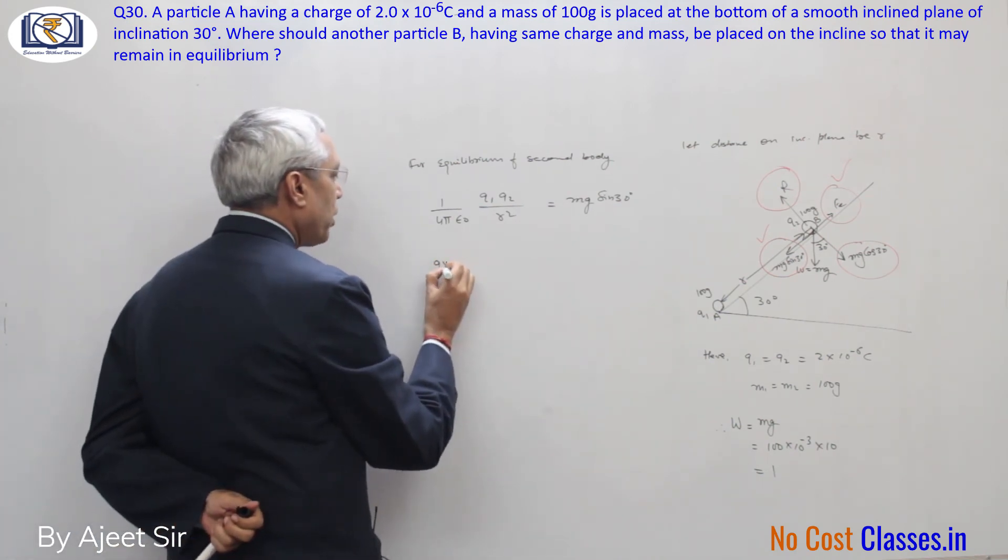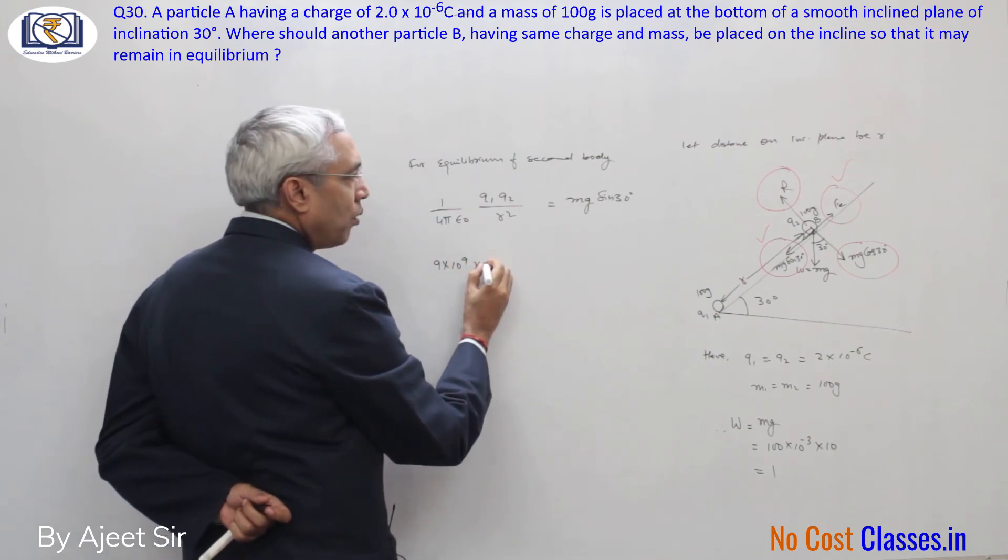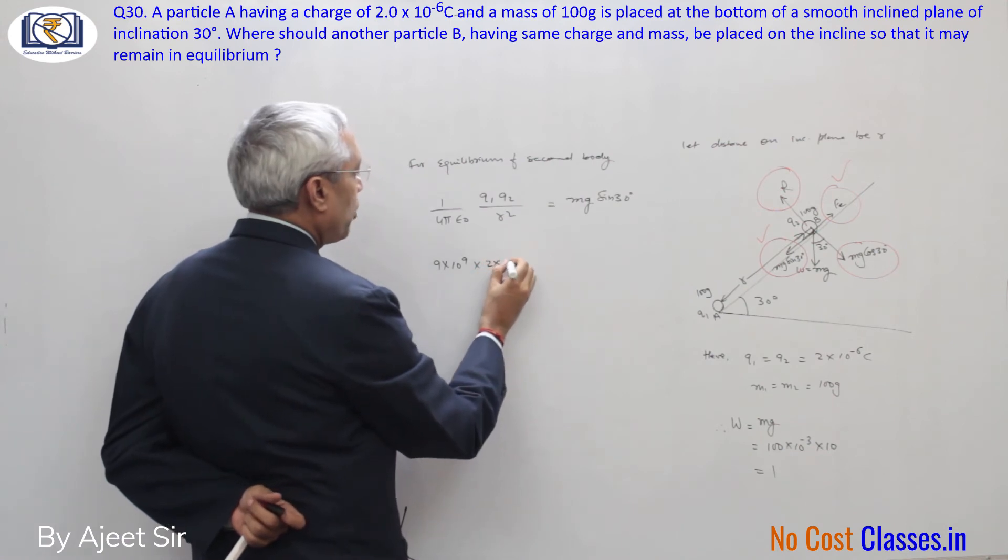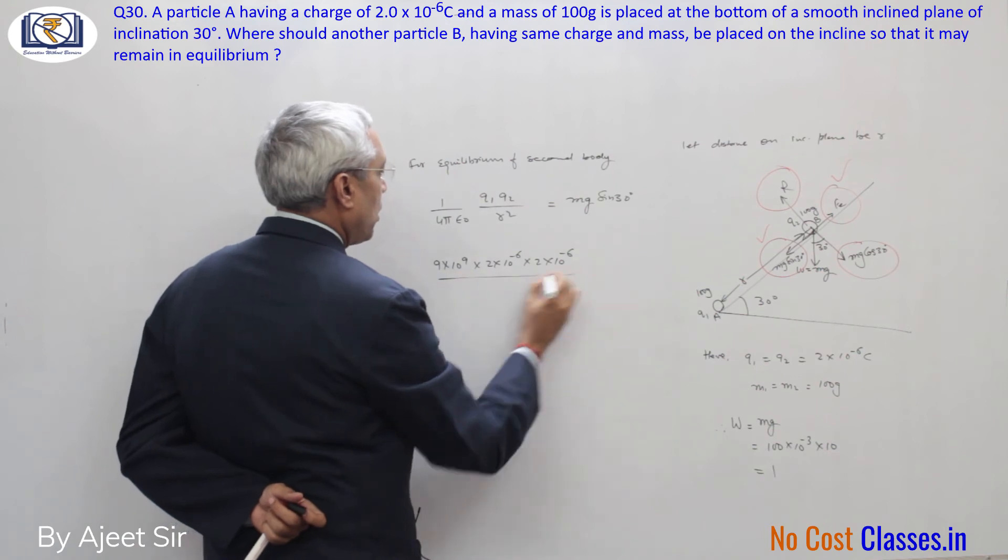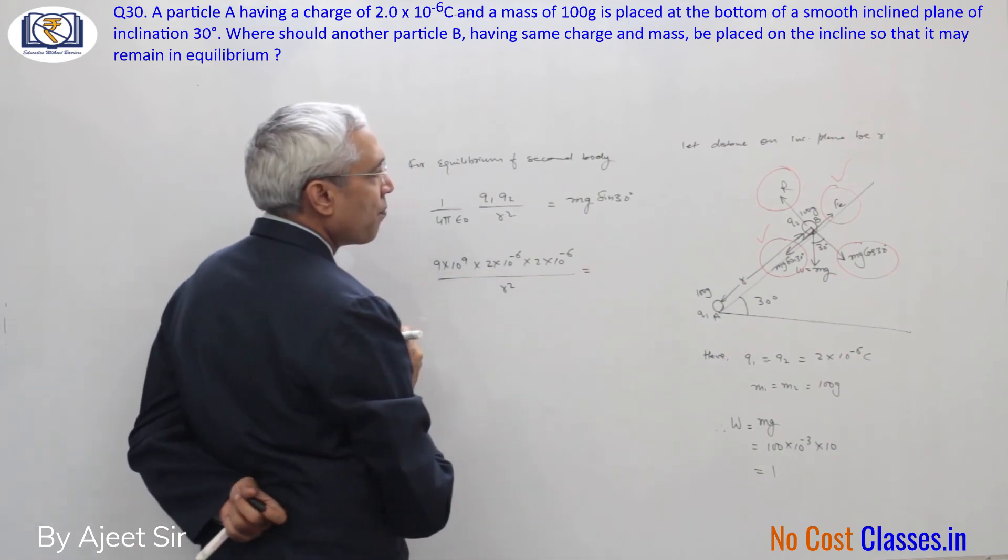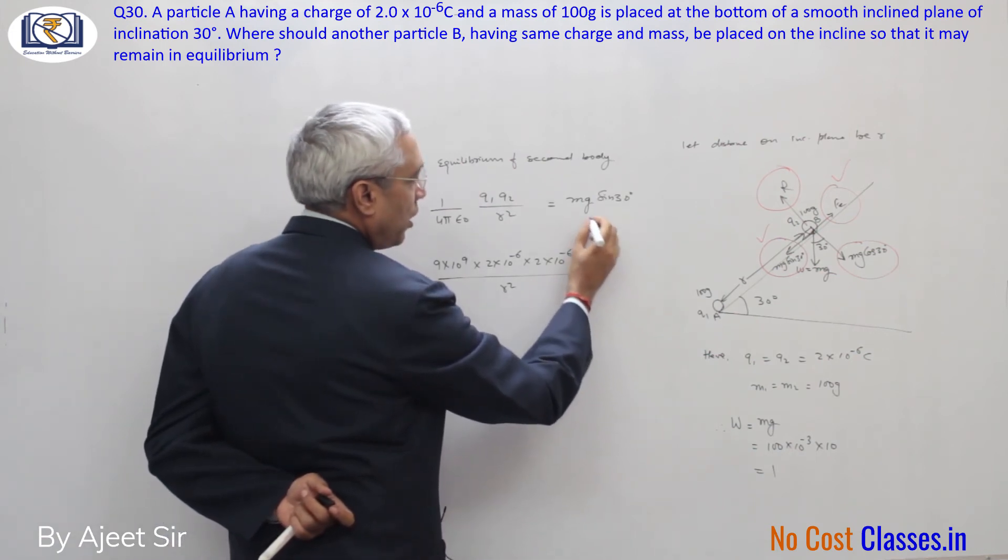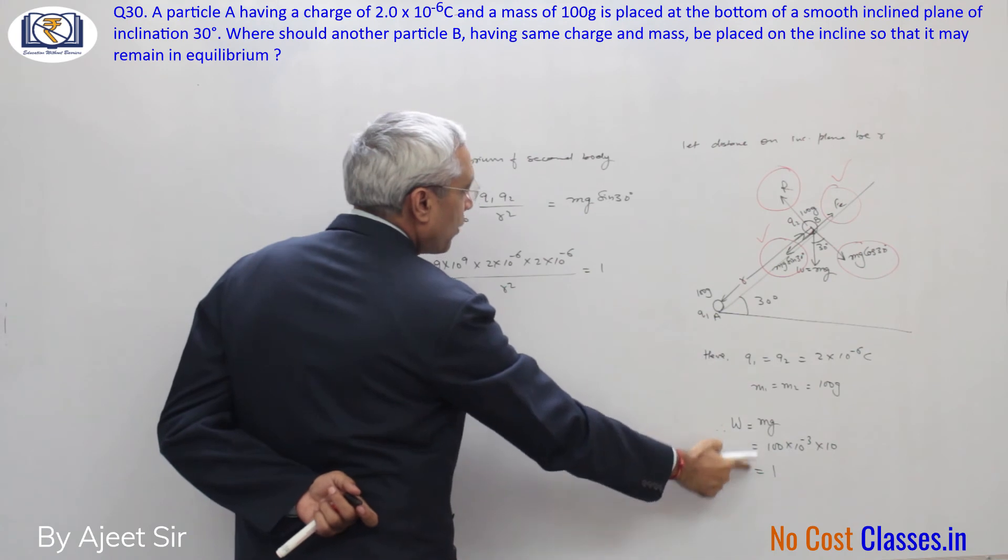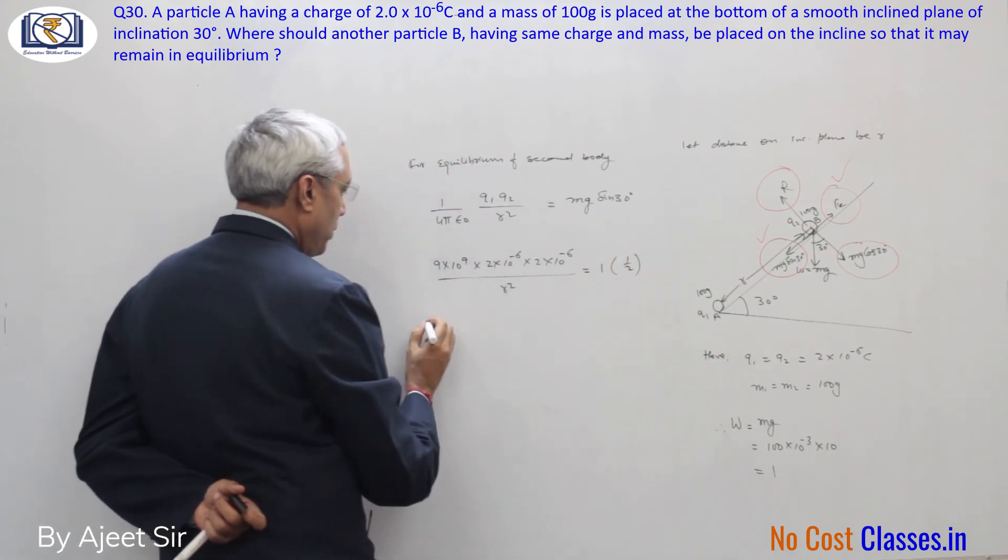9 into 10 to power 9 into 2 into 10 to power minus 6 into 2 into 10 to power minus 6 over r square equals 1, the value of mg. The value of W is 1, and sin 30 is 1 by 2.